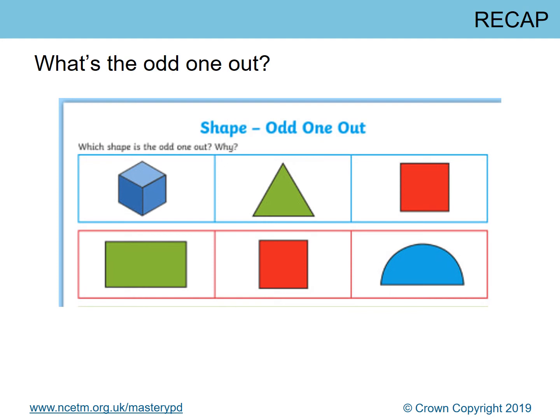We are looking at shapes and geometry. Let's have a look at the odd one out — we've got two odd-one-out questions. The first is the top one, which is blue, and then we'll look at the one at the bottom. I want you to pause the video and think about which one you think is the odd one out, using the sentence: 'I think the odd one out is... because...' In theory there is no wrong answer if you can give a reason.